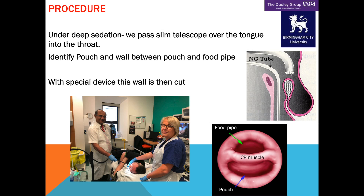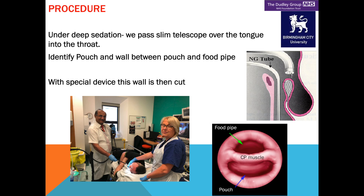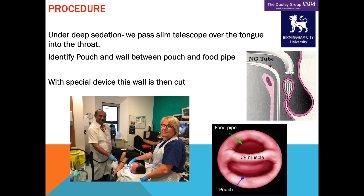Let me talk about the procedure itself. We carry this out with a flexible telescope. The cartoon shows a volunteer who agreed for this photograph to be taken. I have this flexible telescope that we insert down the mouth, over the tongue, into the throat. When we go down into the throat, the picture on your right shows the gullet at the top and the pouch at the bottom, with the muscle in between — that is the muscle we are going to cut.